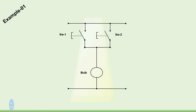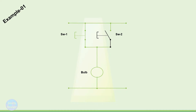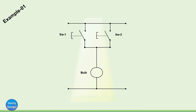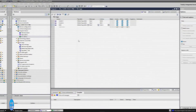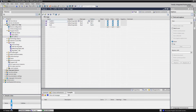Let's start with a simple example. We can see that there are two switches controlling a bulb. When we press switch 01, the bulb turns on. When we release the button or open the switch, the bulb or lamp turns off. Now we will convert this into a ladder diagram and a PLC program.